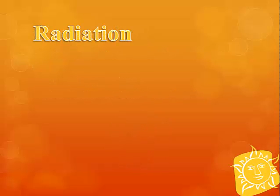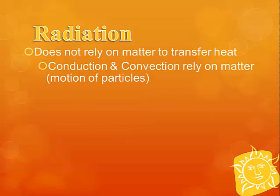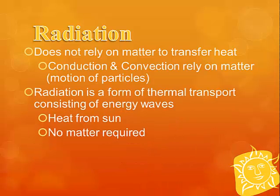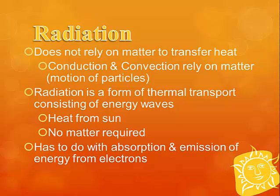The last type, radiation, is different from both conduction and convection because it does not rely on matter at all — it relies on energy waves. This is how we get heat from the sun, even though it's millions of miles away in the vacuum of space, which has no particles. It has to do with those energy waves and the absorption and emission of energy from electrons. That's why in wintertime, ice and snow can melt even though the temperature may be below freezing — because the sun is putting energy into the ice and snow, melting it even when it's freezing outside.